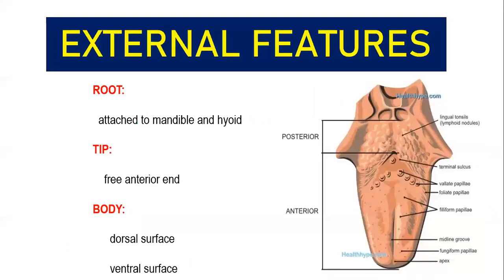Now moving on to external features of tongue. You can study tongue at three levels: the root, the tip, and the region between your root and the tip is called the body. You are supposed to describe these three external features — what you must know in root, in tip, and in body.